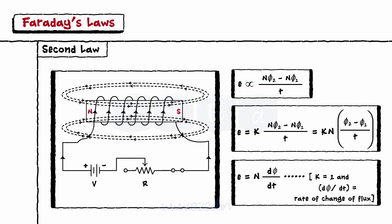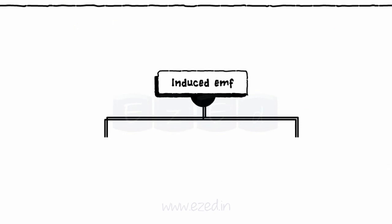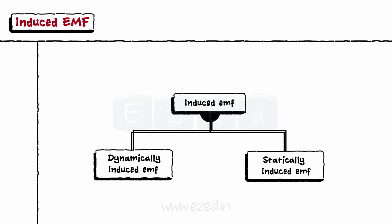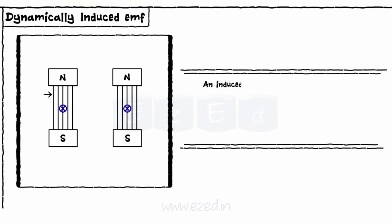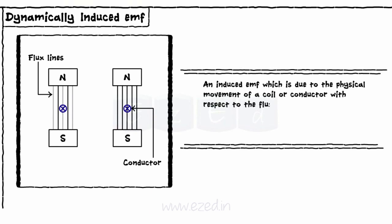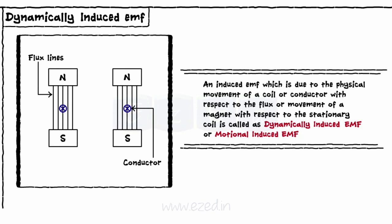The EMF gets induced in two ways: as dynamically induced EMF and statically induced EMF. An induced EMF which is due to the physical movement of a coil or conductor with respect to the flux, or movement of a magnet with respect to the stationary coil, is called as dynamically induced EMF or motional induced EMF. The change in flux linking with the coil can be brought by moving the flux with respect to the conductor, or by moving the coil or conductor with respect to the flux.